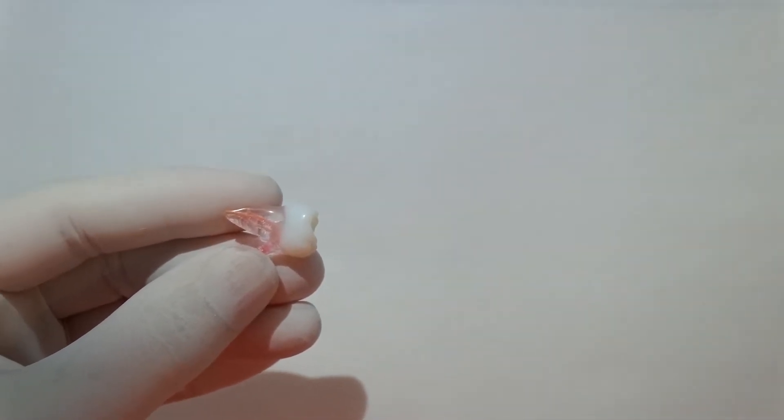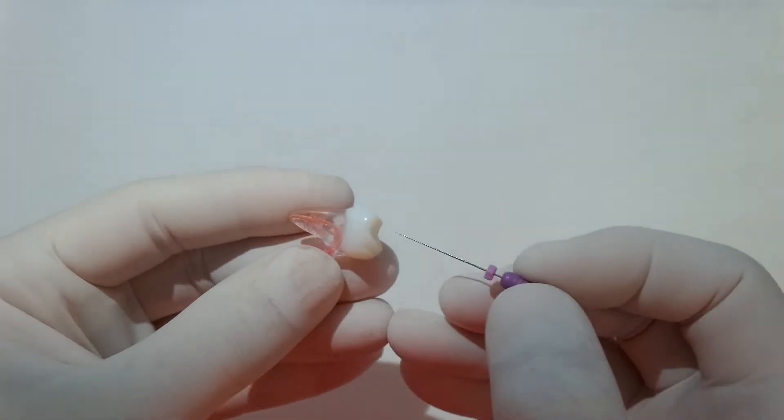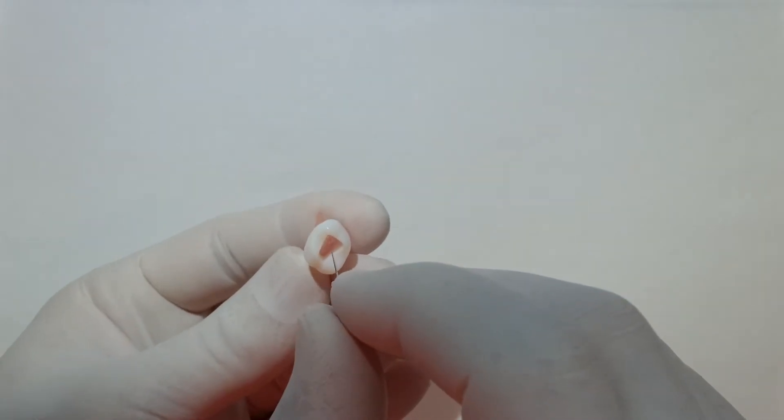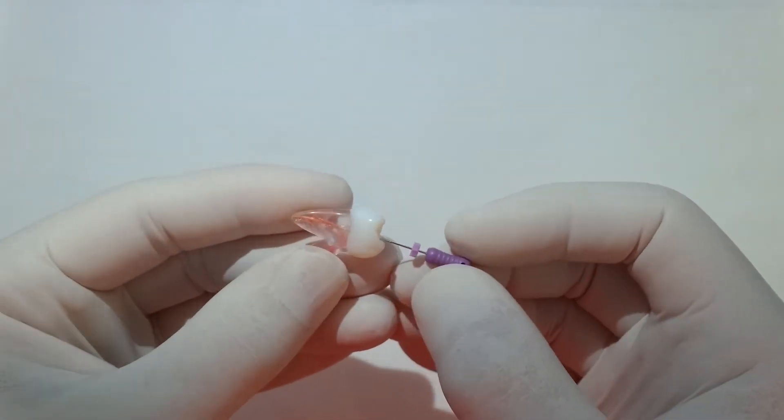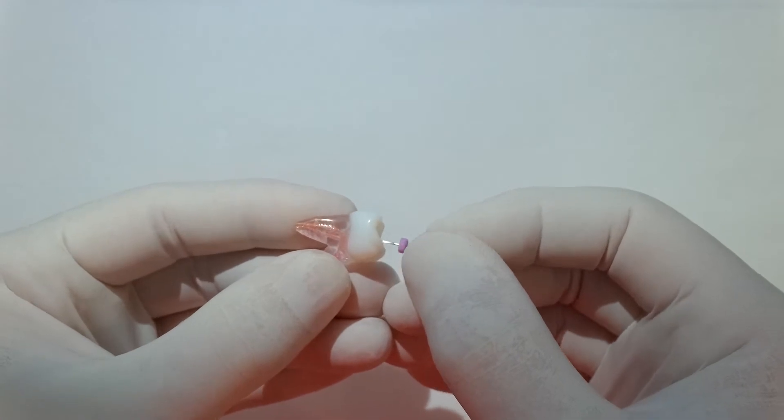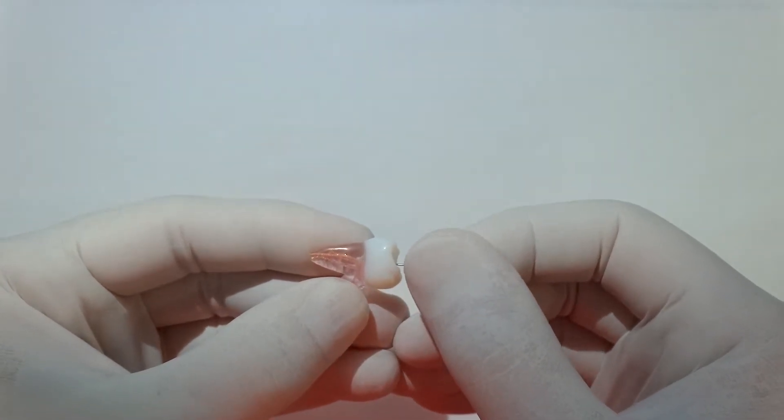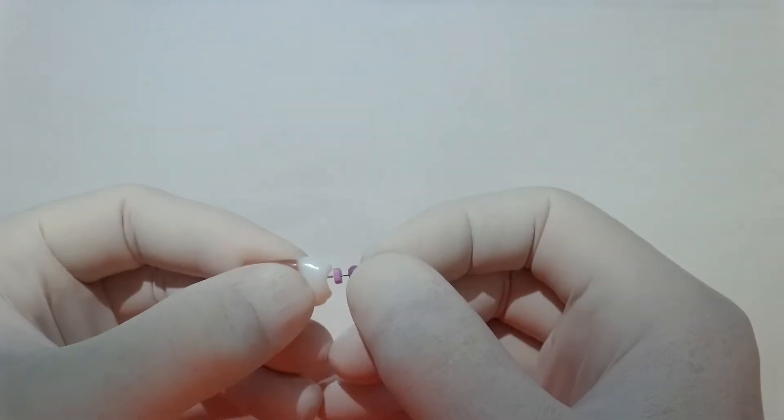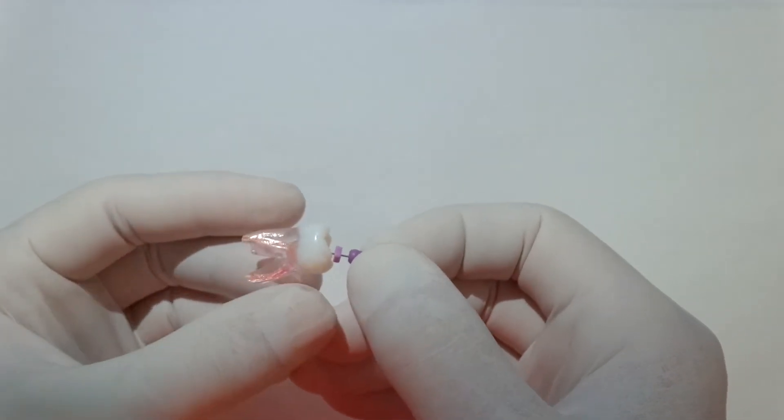There's an MB2 in there as well, just going to stick to the MB1. As we would in a patient, just going to initially negotiate it with a size 10 hand file. Rather than using x-rays and apex locators, we get our working length by putting the file right to the very end and seeing when it pokes out the end.